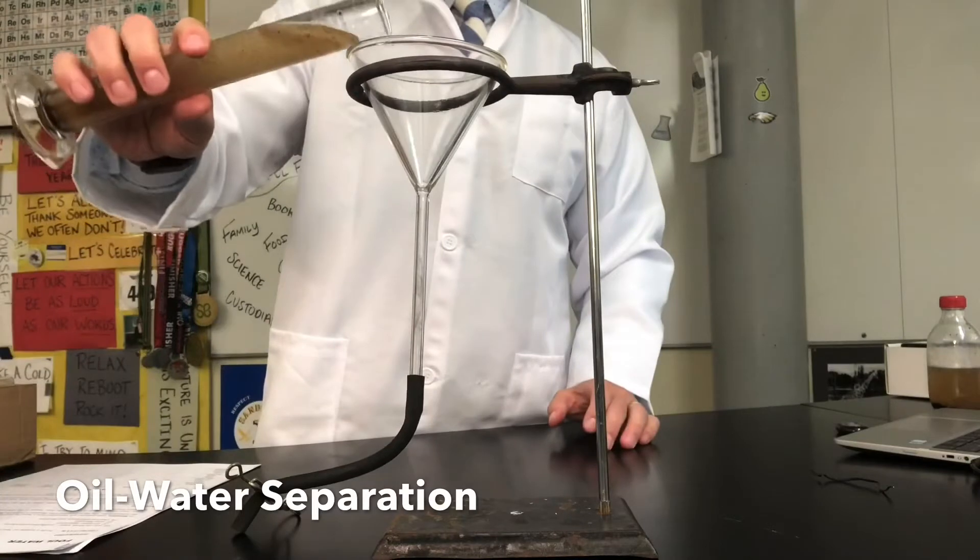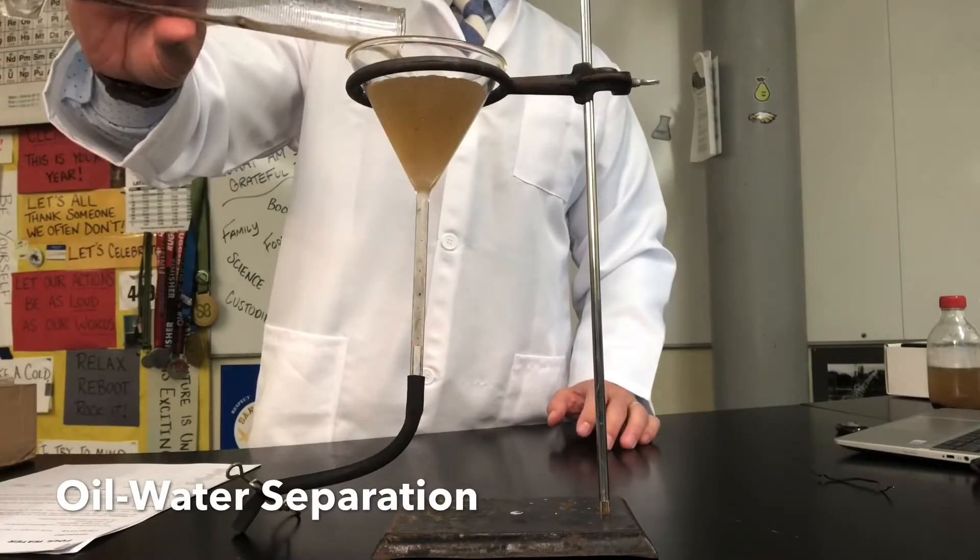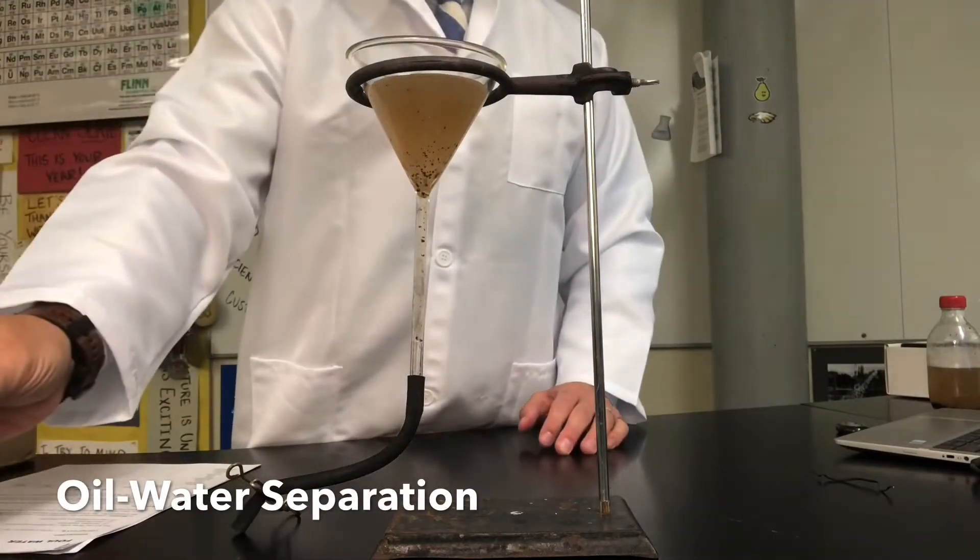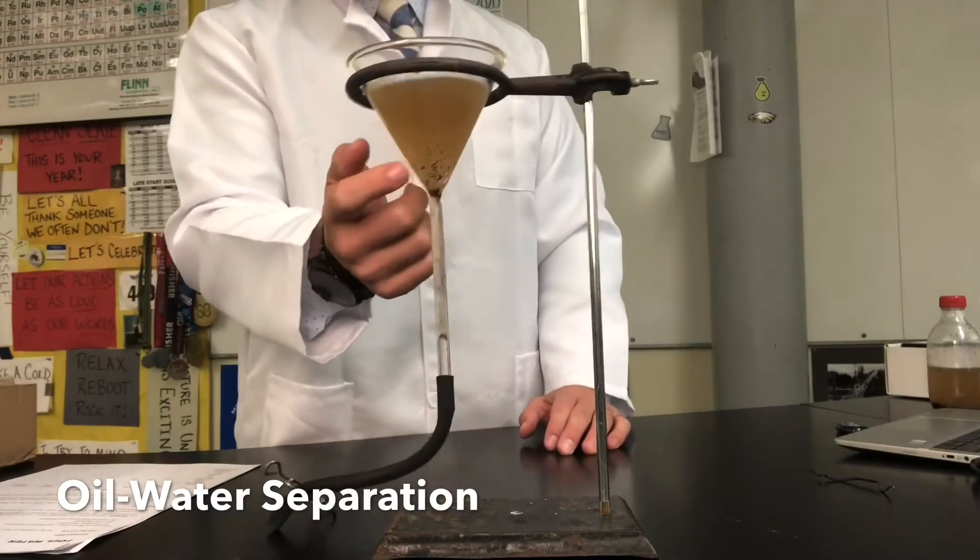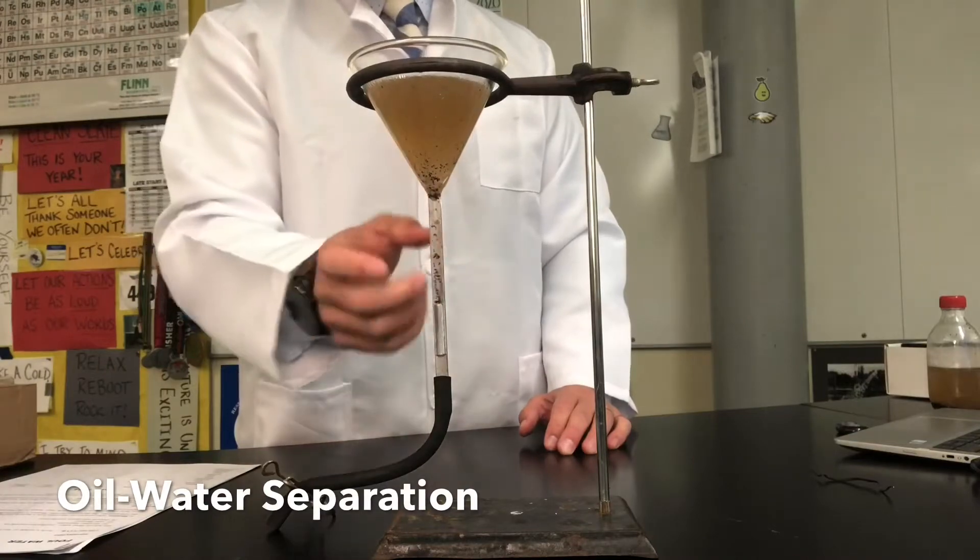I'm then going to take my oil and water sample and I'm going to pour it all the way into this funnel. What I'm then going to do is give it a little bit of time and I'm going to let the oil float to the top as the more dense water sinks to the bottom.